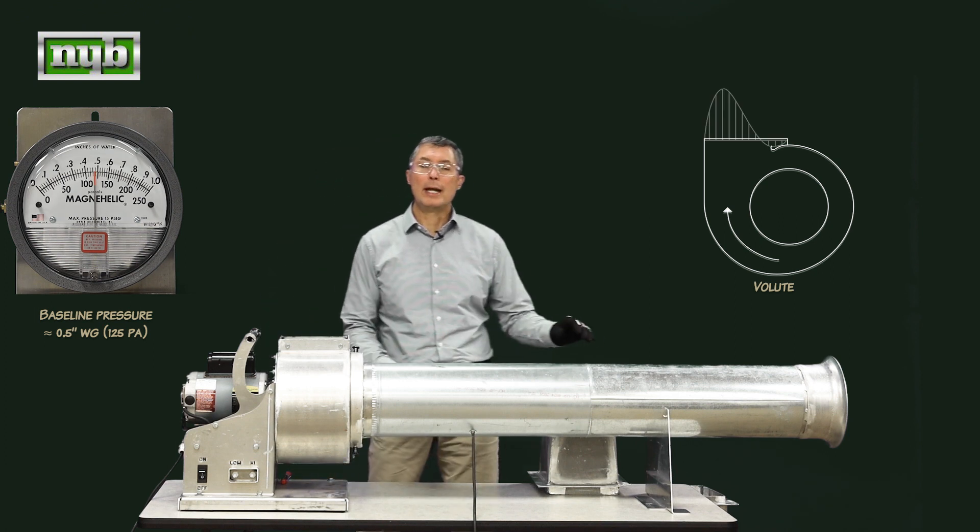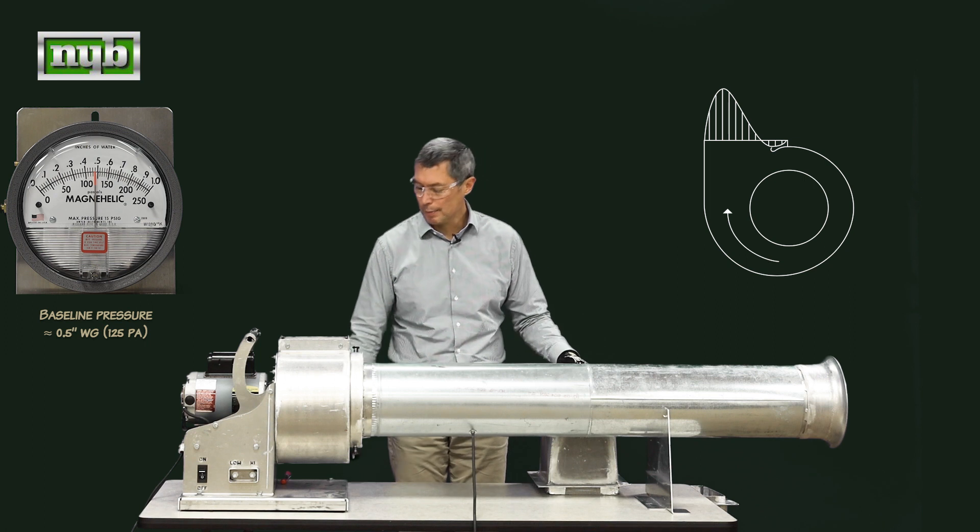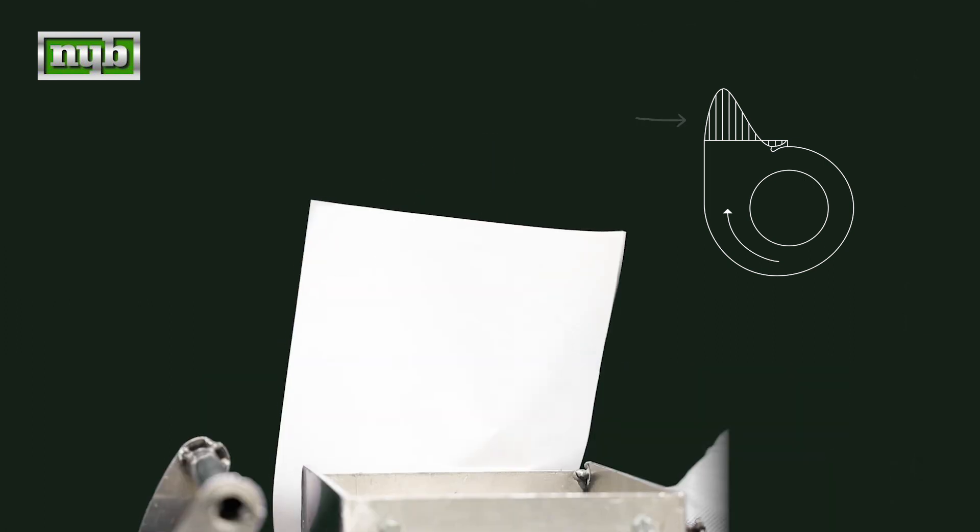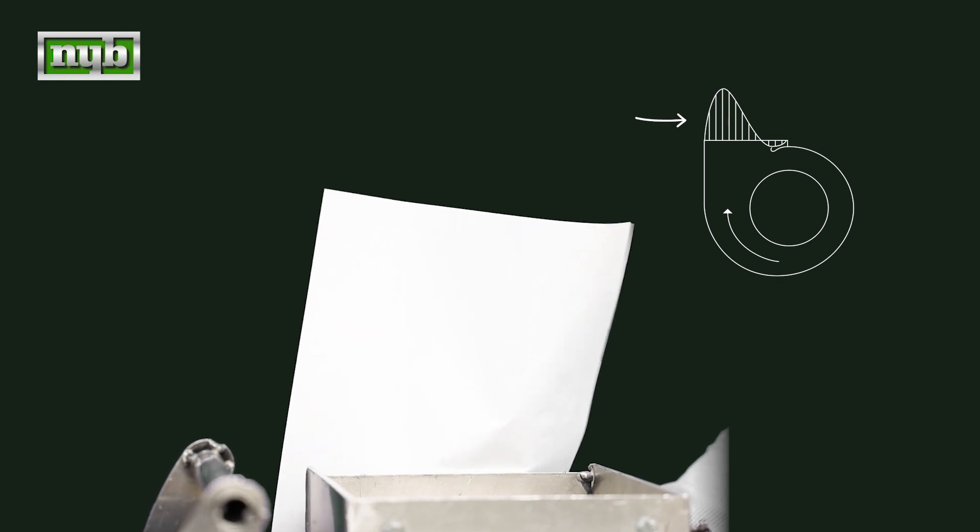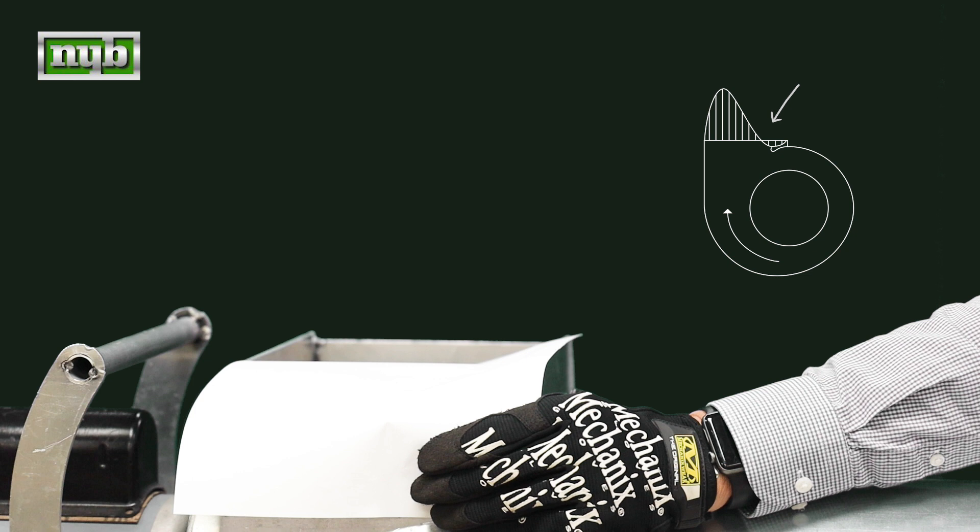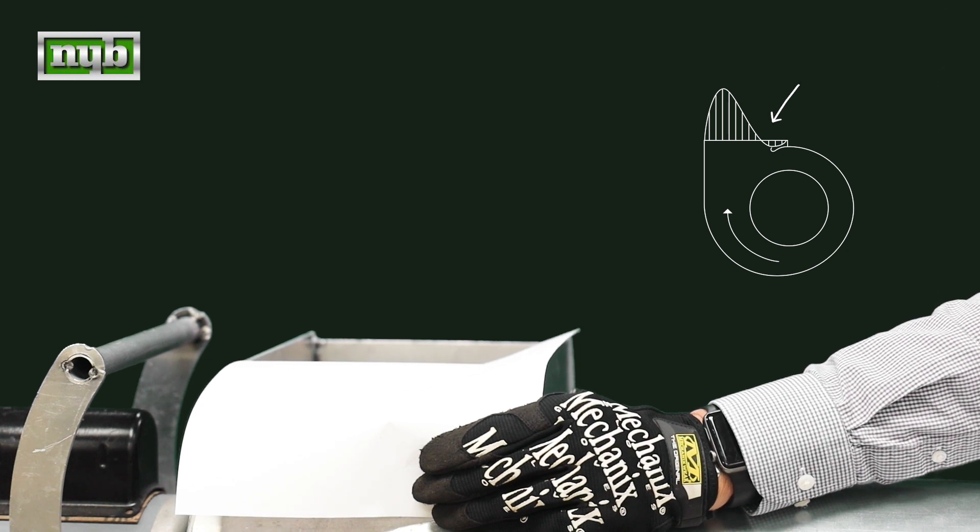As a result most of the air hugs the outside of the volute shape and we can demonstrate that by using this piece of paper. Putting it on the outside of the volute shape that piece of paper stands up vertically. Put it on the inside of the volute shape it actually gets sucked into the fan just behind the cutoff sheet. There's a negative pressure region there.